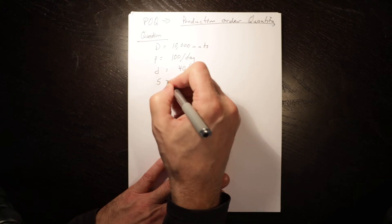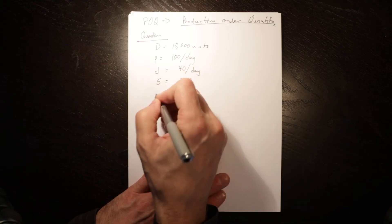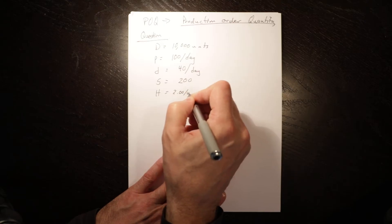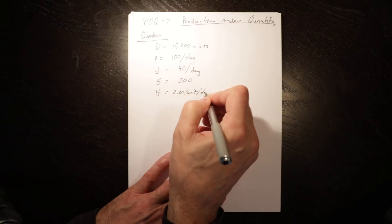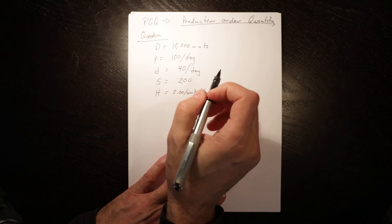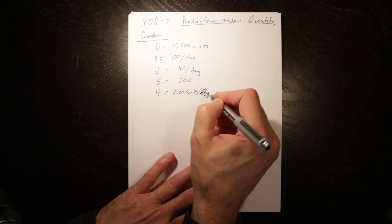Setup costs are $200 and holding costs are $2 per unit per year.